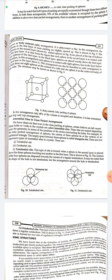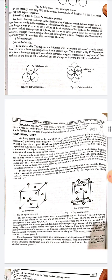Interstitial sites: even in the close packing of spheres, certain hollows are left vacant. These holes or voids in the crystal are called interstitial sites. These sites are named depending on the close-packed arrangement of the spheres. When the centers of three spheres lie at the vertices of an equilateral triangle, the empty space between these three spheres is called a triangular site. There are two important types of interstitial sites: tetrahedral sites and octahedral sites.